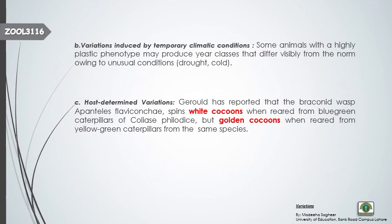The second type of ecological variation is variation induced by temporary climatic conditions. Some animals with a highly plastic phenotype may produce year-classes that differ visibly from the norm under unusual conditions like drought and cold. If conditions become much drier or colder than normal, some animals in the population produce a temporary change in phenotype. This temporary change is known as a plastic phenotype.